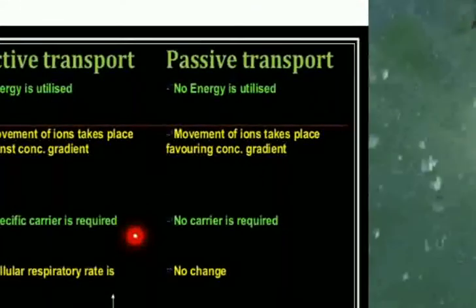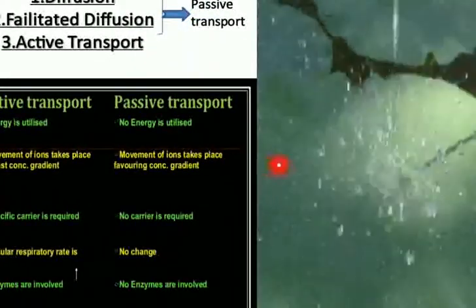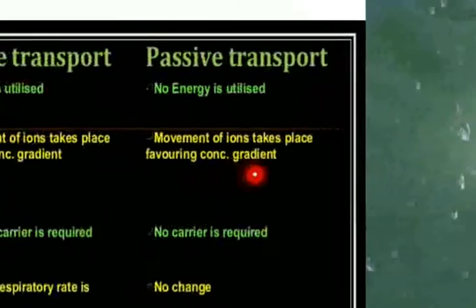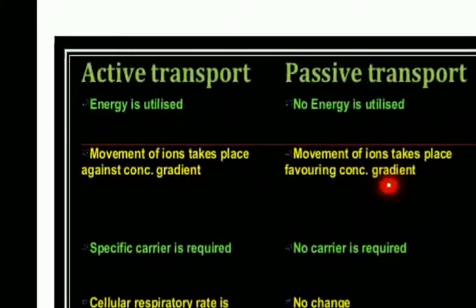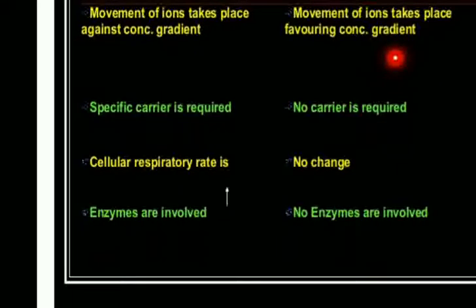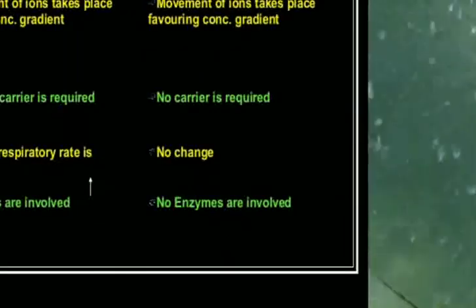In active transport, specific carriers are required, whereas no carriers are required in passive transport. Cellular respiratory rate is higher in active transport because respiration leads to liberation of energy, whereas no change in respiratory rate occurs in passive transport. Enzymes are involved in active transport, whereas no enzymes are involved in passive transport.